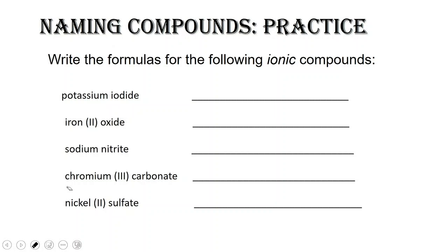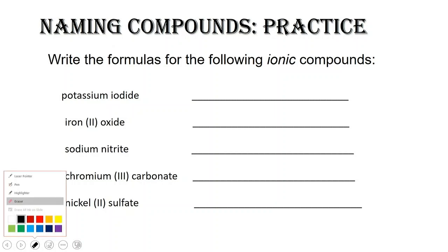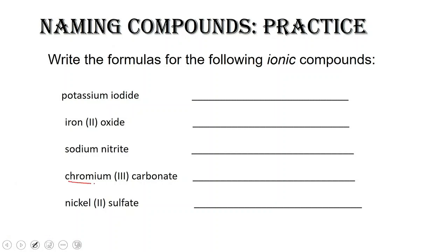Let's do one of the harder problems together. We're going to do the reverse and write the compound formula based off of the name. Let's do chromium(III) carbonate. If you see that Roman numeral, that tells you what the charge is on that element. And because it has this Roman numeral, we also know it's a transition metal. So we have to figure out how many ions of each type in order to write the proper formula.